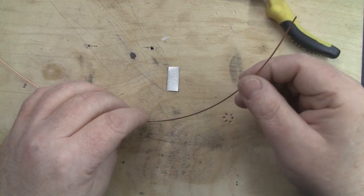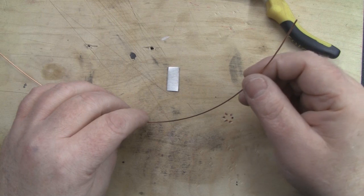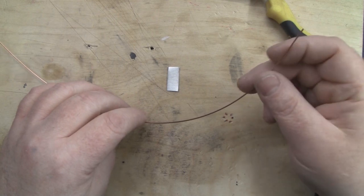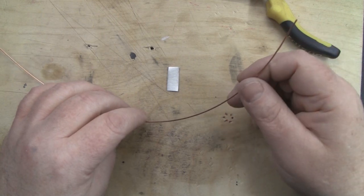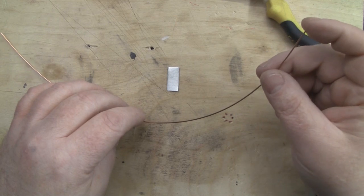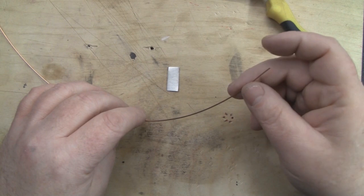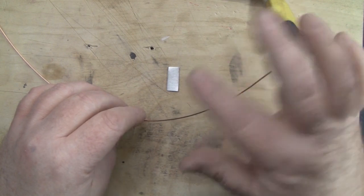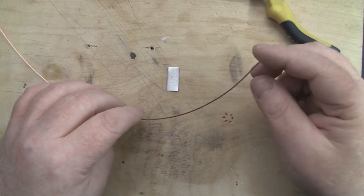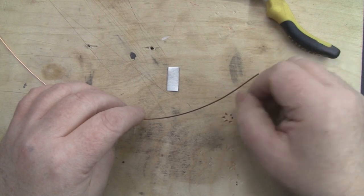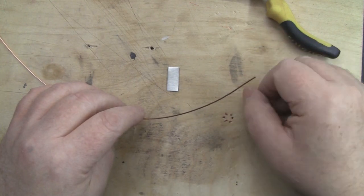The copper wire I'm using for the elements is actually 21 SWG. You don't really want to go any thicker than this because it'll make it extremely hard to make the elements with any degree of accuracy. Any thinner will make them too delicate unless you're going to cover them, but 21 SWG seems to be just about right. Let's crack on with making this antenna.